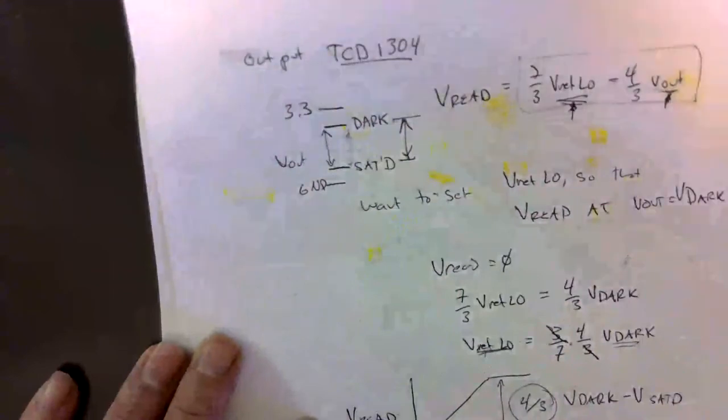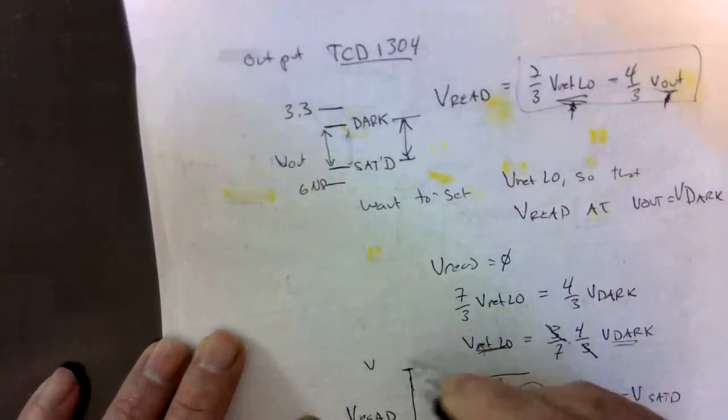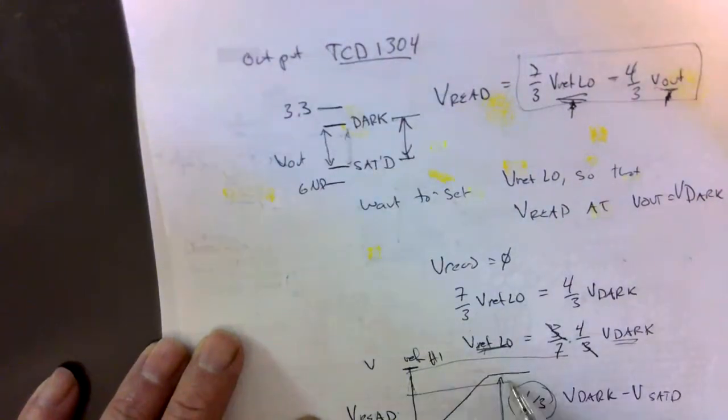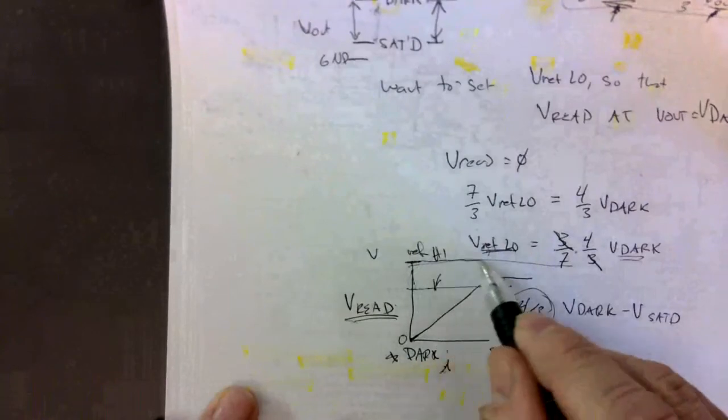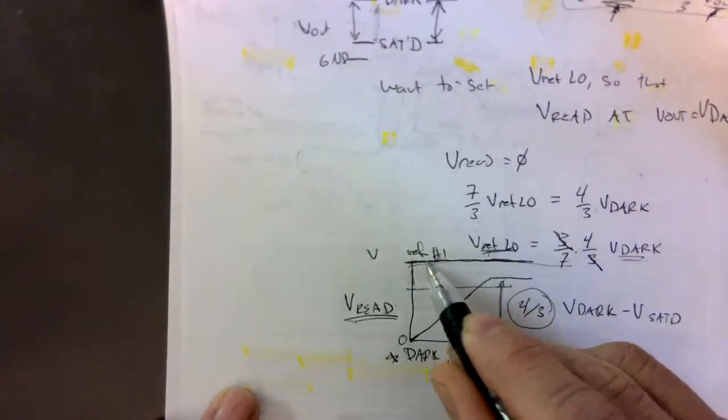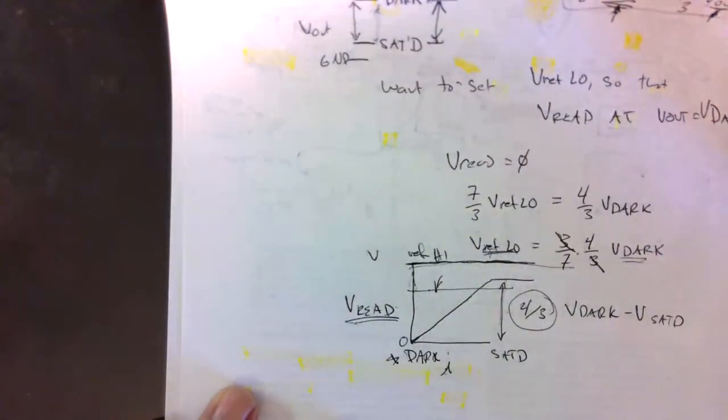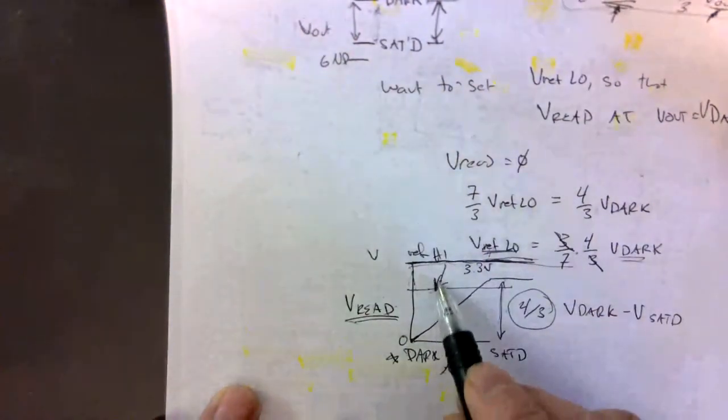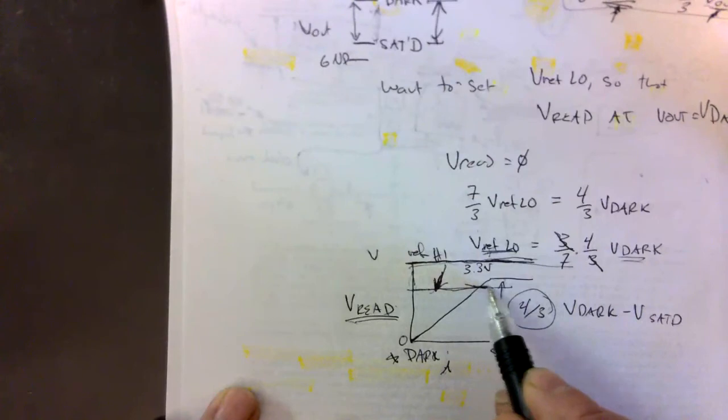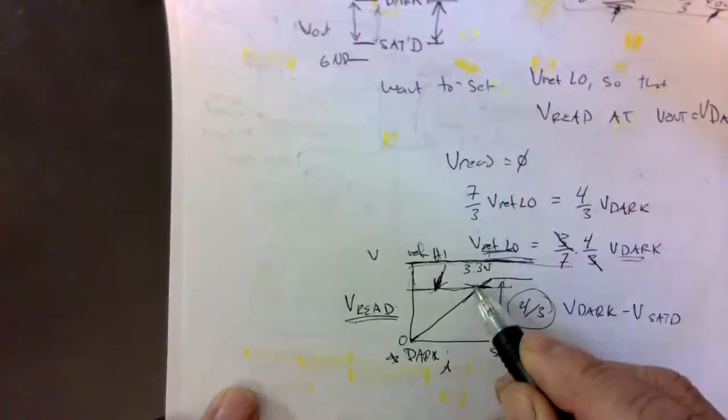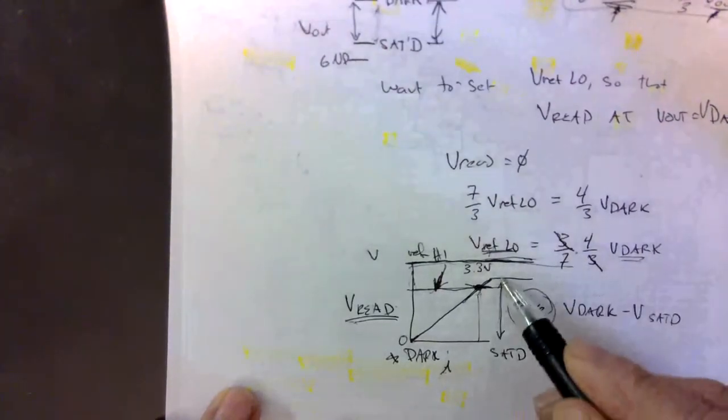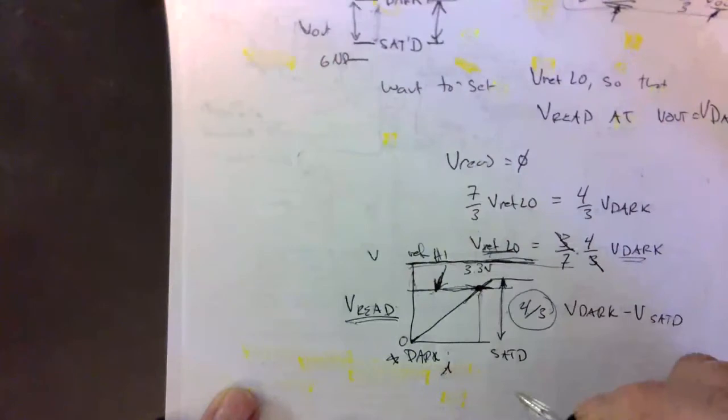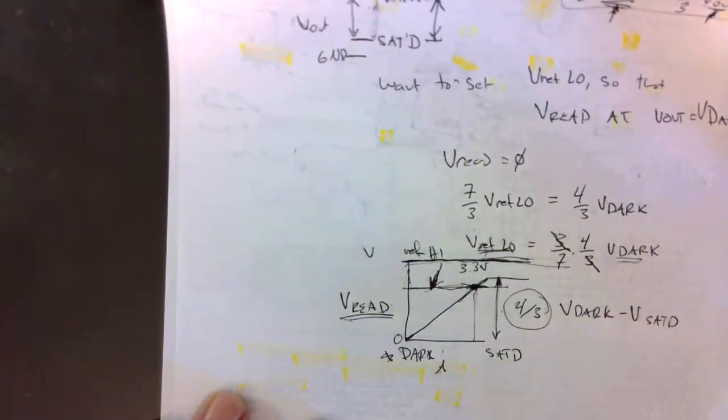We have V read, and if we set V ref high here then we are going to get some value. We have a high reference that can be changed by changing the PWM output. You can have it up here at 3.3 volts, you can lower it down. I think we are going to show that having it lower so that you can measure below the saturation voltage and use that as your high output. There is some value to that.